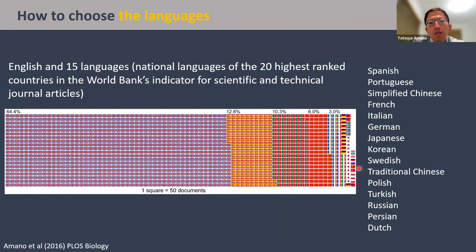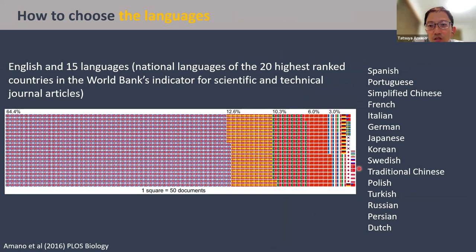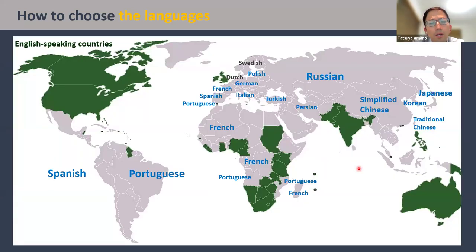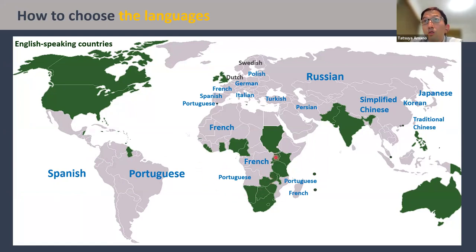Let's look at how we choose the relevant languages. In this study, we started with 15 languages — the national languages of the 20 highest-ranked countries in the World Bank's indicator for scientific and technical journal articles. These 15 languages also nicely cover most regions of the world: Spanish and Portuguese for Latin America, French and Portuguese for many African countries, and Russian, Chinese, Korean, and Japanese for East Asian countries. We aimed to cover these 15 languages but unfortunately couldn't find collaborators for Swedish and Dutch.